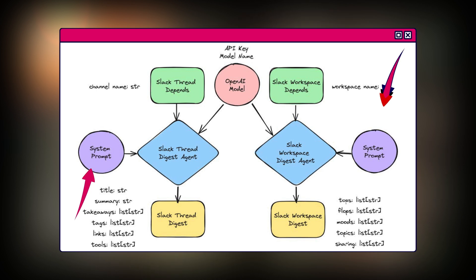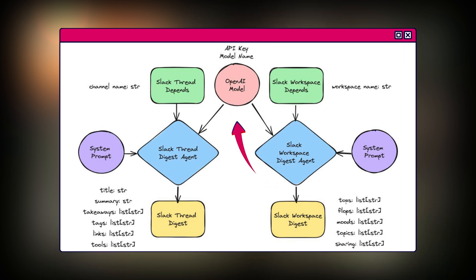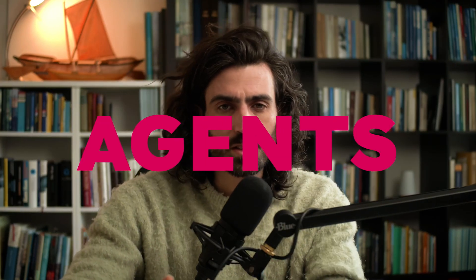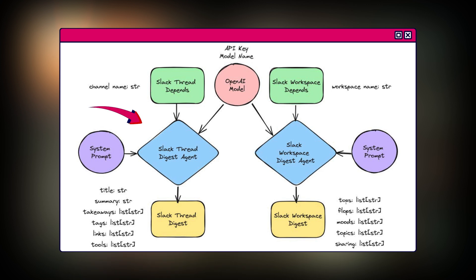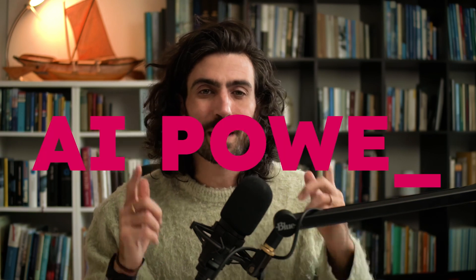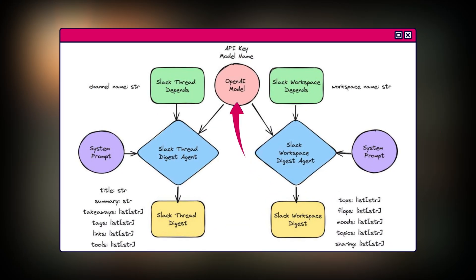Inputs: we feed the system a system prompt — basically what we want it to do — and then we also provide the API key and model name of our AI. We will use additional context as dependencies, such as the name of the Slack thread and the workspace being processed. The agents — the Slack thread digest agent and Slack workspace digest agent — are our workhorses. The thread agent focuses on individual conversations, while the workspace agent looks at the entire workspace. Our OpenAI model provides the intelligence to understand and summarize the Slack content.